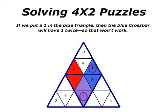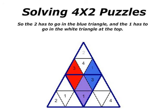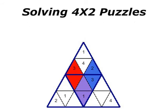If we put a 1 in the blue triangle, then the blue crossbar will have 1 twice, so that won't work. So the 2 has to go in the blue triangle, and the 1 has to go in the white triangle at the top.